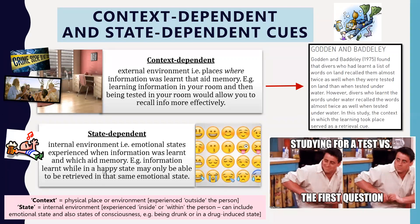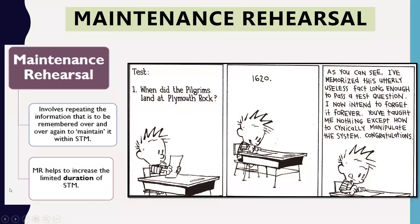Context dependent cues relate to the external physical environment, while state dependent cues relate to the internal environment — emotional states and other states of consciousness. That's the key difference between the two. As long as you can distinguish between them and give one example each, you're good with this topic.